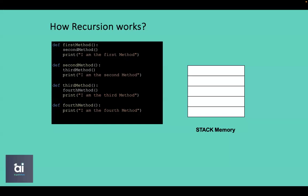We start from the first method. As soon as we call it, the first statement within the first method is to call the second method, so control goes to the second method. After completing the second method, it needs to come back to the first method to execute the print statement. So the system needs to store the first method somewhere, and it pushes the first method to stack memory so it remembers to come back.